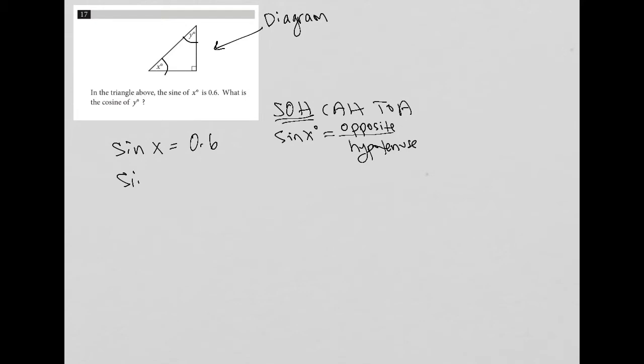I'm gonna rewrite this as a fraction instead of as a decimal. So instead of sine x equals 0.6, I'm gonna say sine x equals 6 tenths, which of course can be reduced to sine x equals 3 fifths.